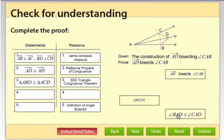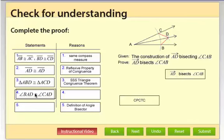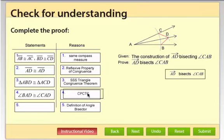OK, now next, keep in mind what we're trying to prove. We're trying to prove ray AD bisects angle CAB. So when you have an angle bisector, the angles are congruent. So using the fact that we have congruent triangles, we can conclude angle BAD and angle CAD are congruent because they are corresponding parts of congruent triangles.